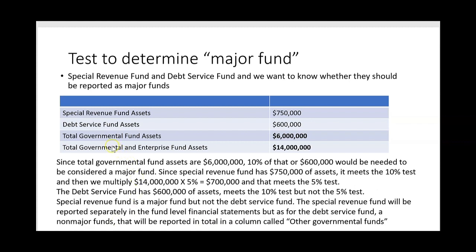Now let's change just one thing: total governmental and enterprise fund assets drop from $30 million to $14 million. Total governmental fund assets remain $6 million, so $600,000 is still needed to pass the 10% test. The special revenue fund passes with $750,000. Now, 5% of $14 million is $700,000. The special revenue fund has $750,000, which exceeds $700,000 — so it meets the 5% test too. The special revenue fund is a major fund and will be reported separately in its own column in the fund-level financial statements.